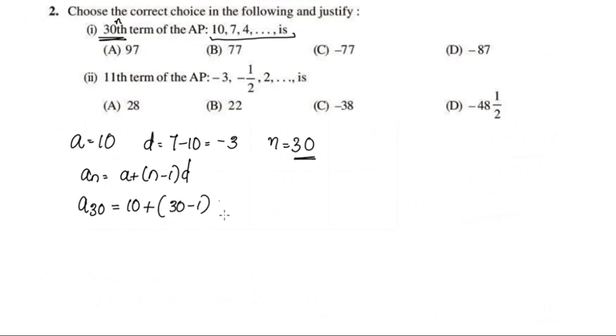D is negative 3, so a_30 equals 10 plus 30 minus 1 is 29 into negative 3, which equals 10 plus negative 87, equals negative 77. Option C is correct.